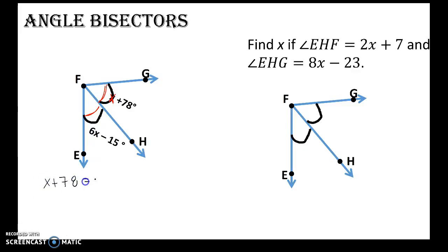So x plus 78 equals 6x minus 15. Solving this equation for x, first I'll subtract x from both sides, and then I'm going to add 15 to both sides. So I get 5x is equal to 93. Dividing both sides by 5, x would equal 18.6.